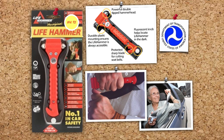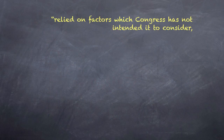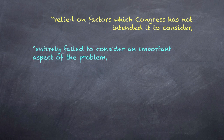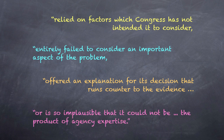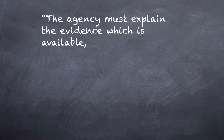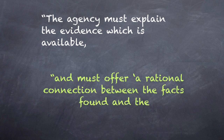According to the Court, an agency rule would be arbitrary and capricious if the agency has relied on factors which Congress has not intended it to consider, entirely failed to consider an important aspect of the problem, offered an explanation for its decision that runs counter to the evidence, or is so implausible that it could not be the product of agency expertise. In general, the agency must explain the evidence which is available and must offer a rational connection between the facts found and the choice made.